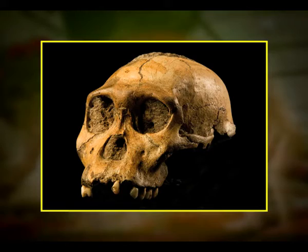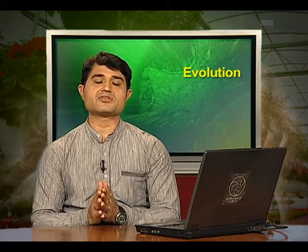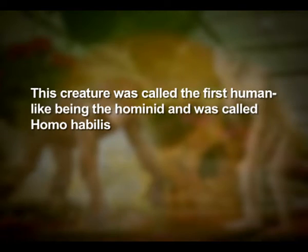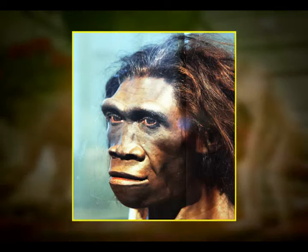2 million years ago, Australopithecines probably lived in east African grasslands. Evidence shows they hunted with stone weapons but essentially ate fruits. Some of the bones discovered were different. This creature was called the first human-like being — the hominid — and was called Homo habilis. The brain capacity was between 650 to 800 cubic centimeters. They probably did not eat meat.